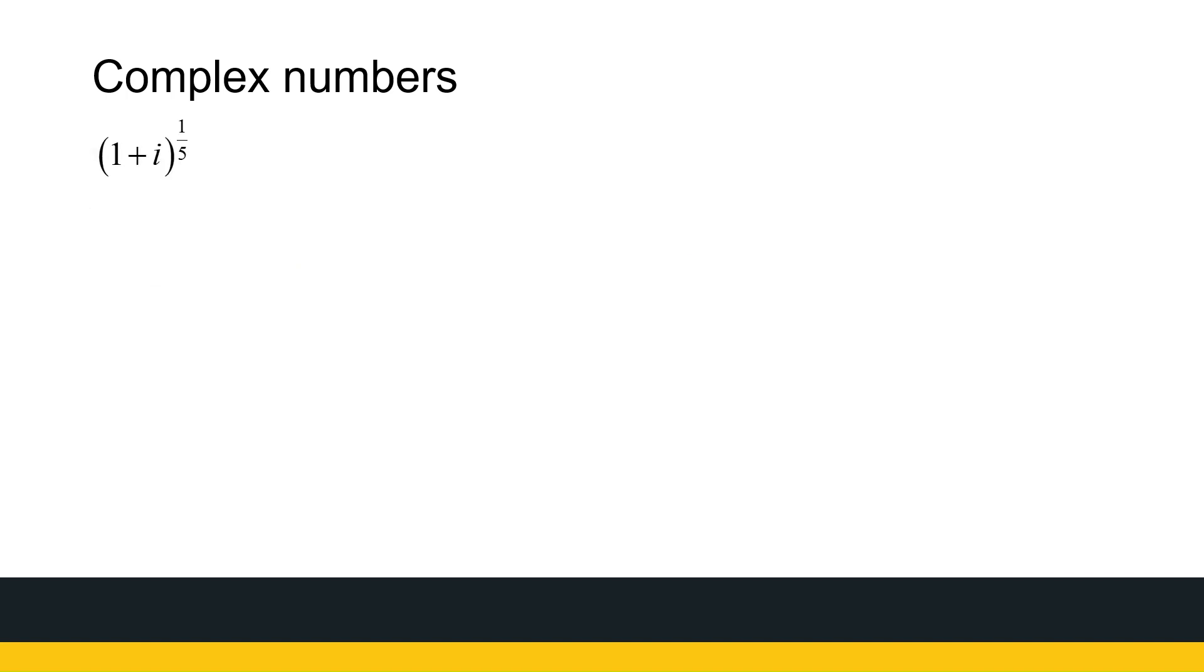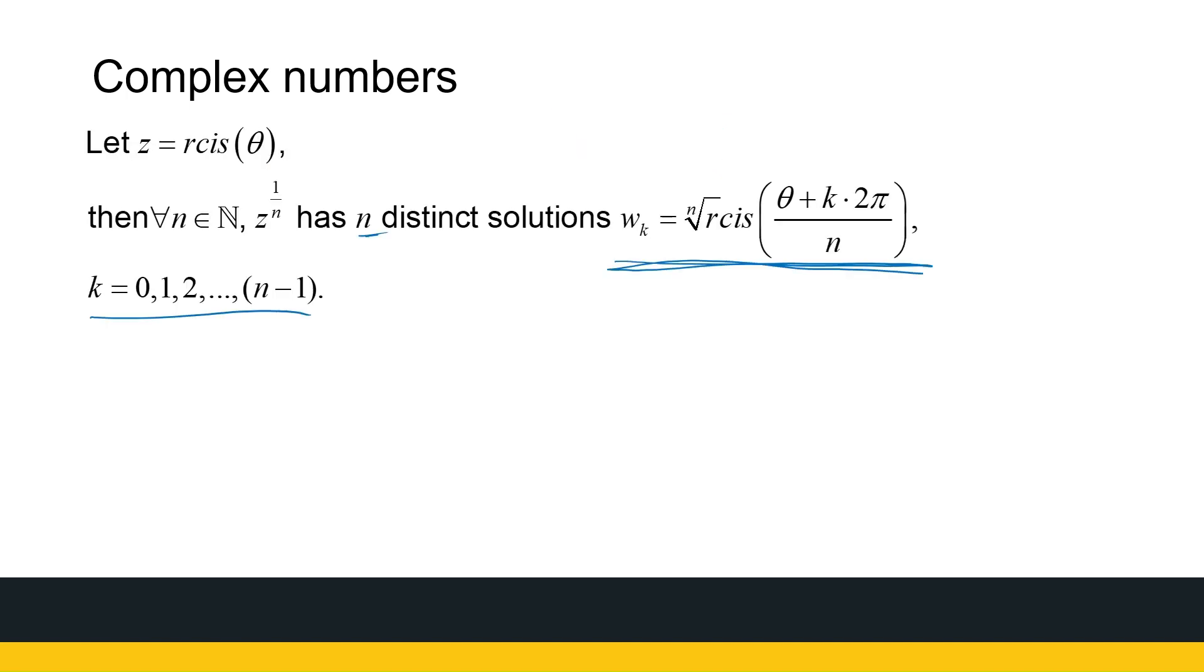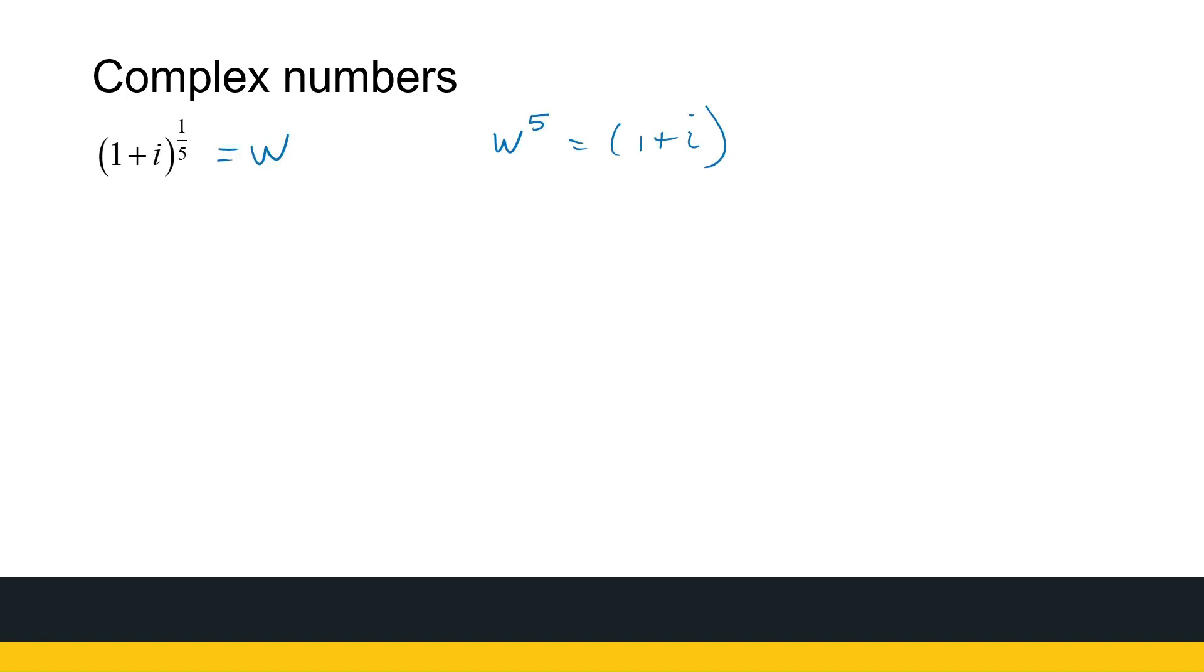If I've got 1 plus i to the power 1 over 5, that's equal to some complex number w. It's similar to say w to the power 5 is 1 plus i. We want to get to w. We want all the options for w. This formula tells me there are five different solutions. But first, I need to have this in polar form. 1 plus i is root 2 cis pi over 4.